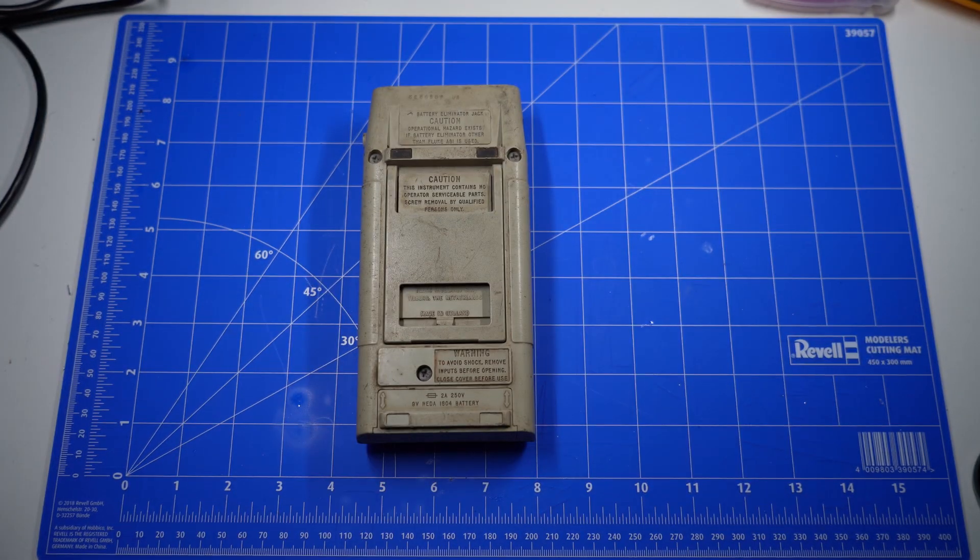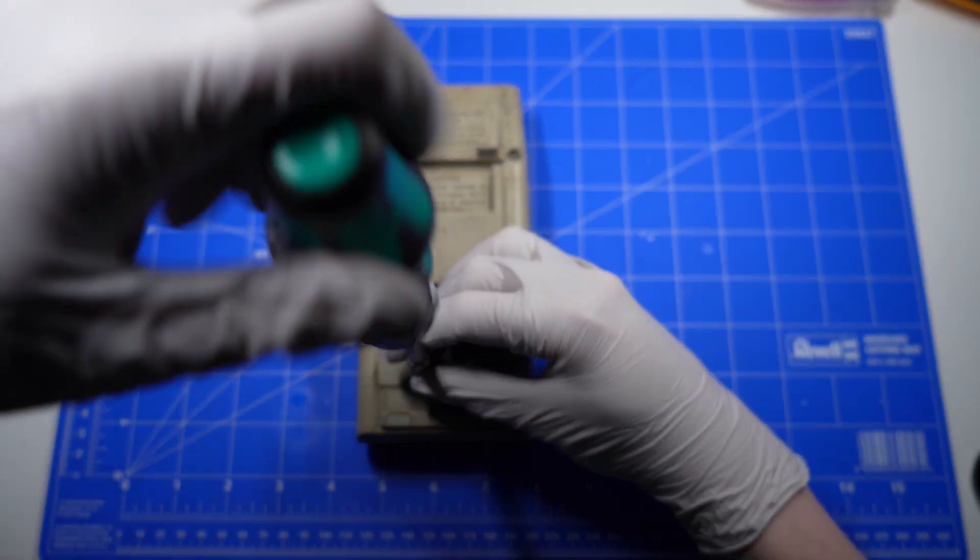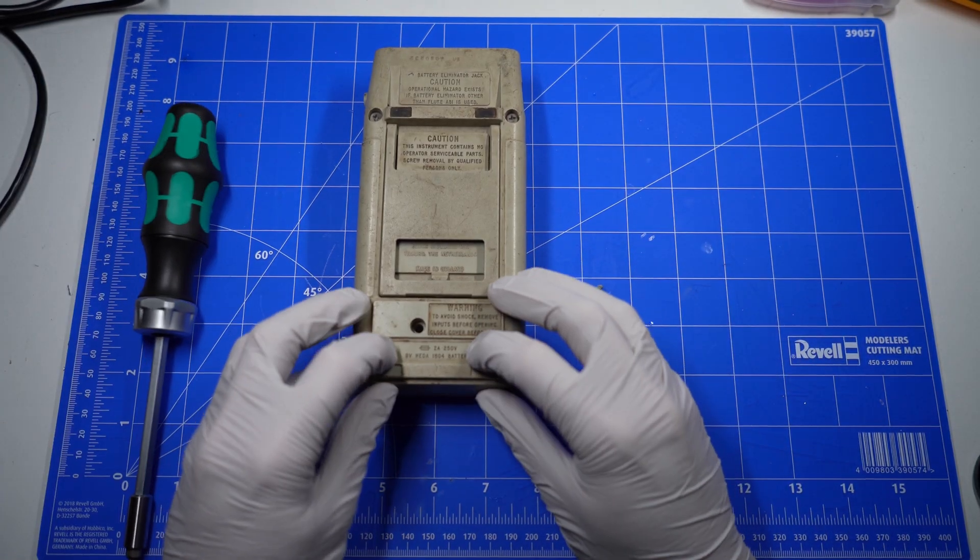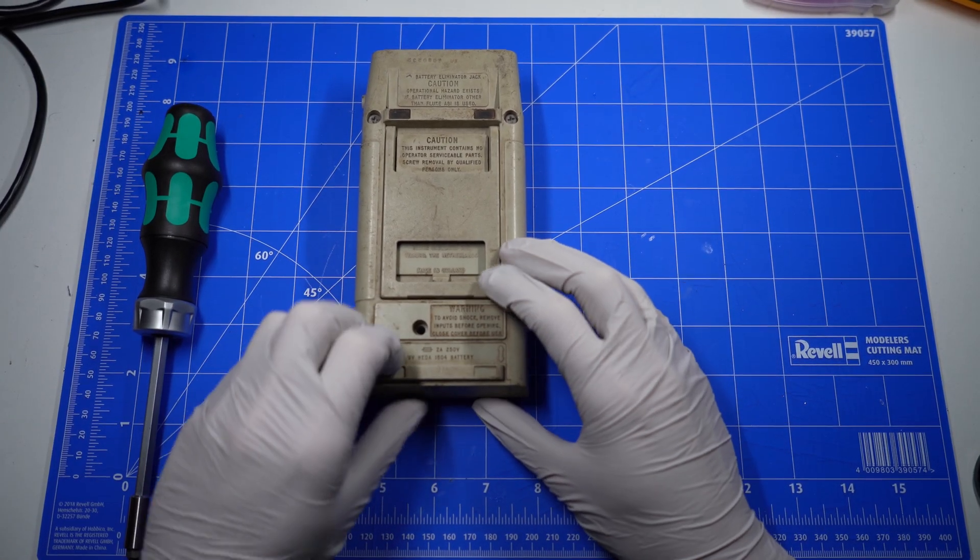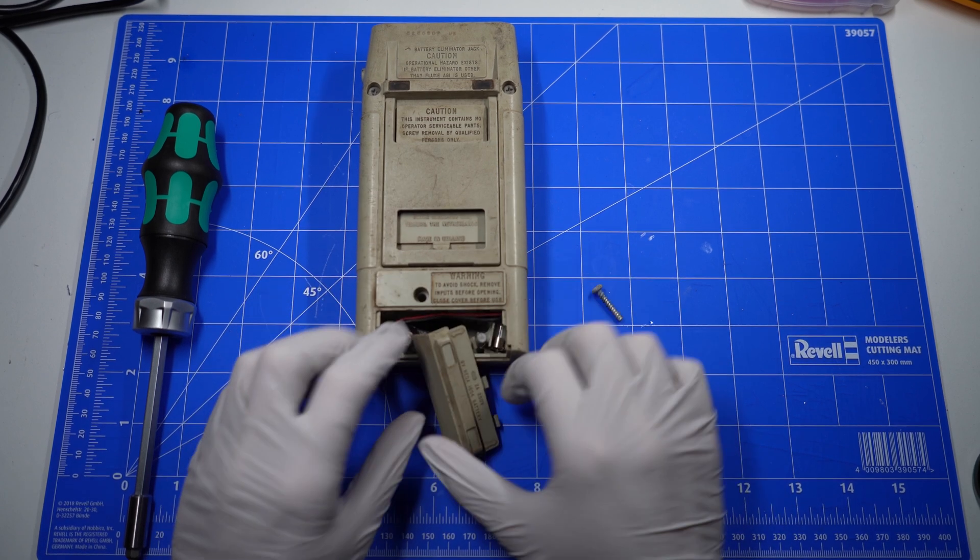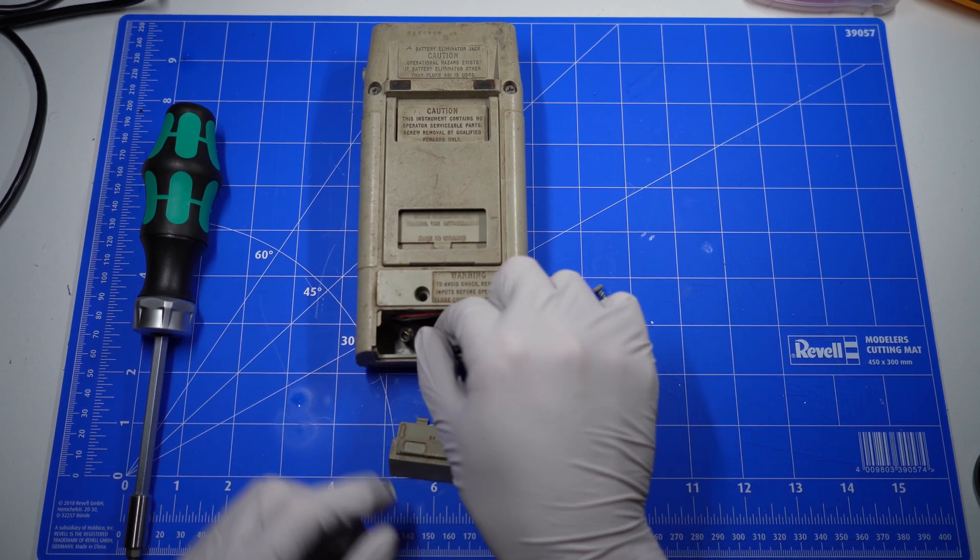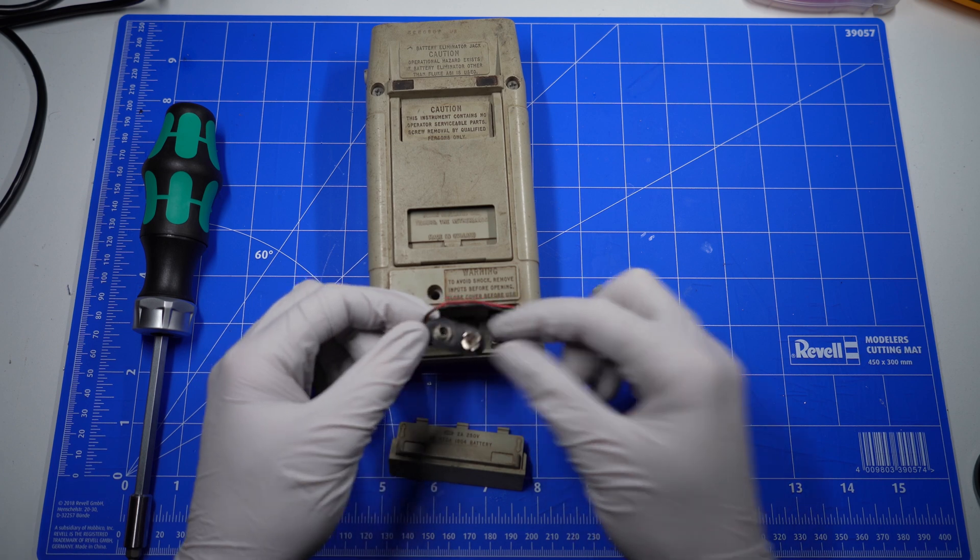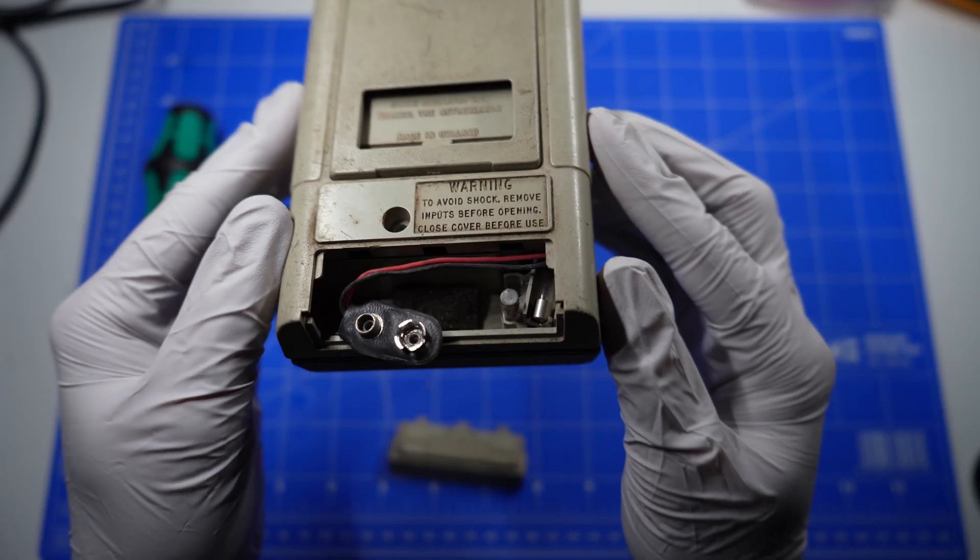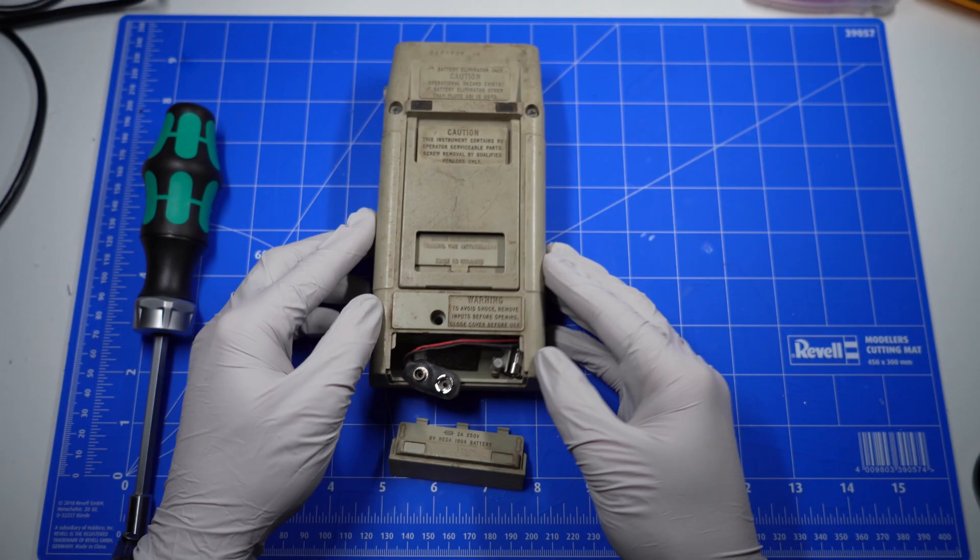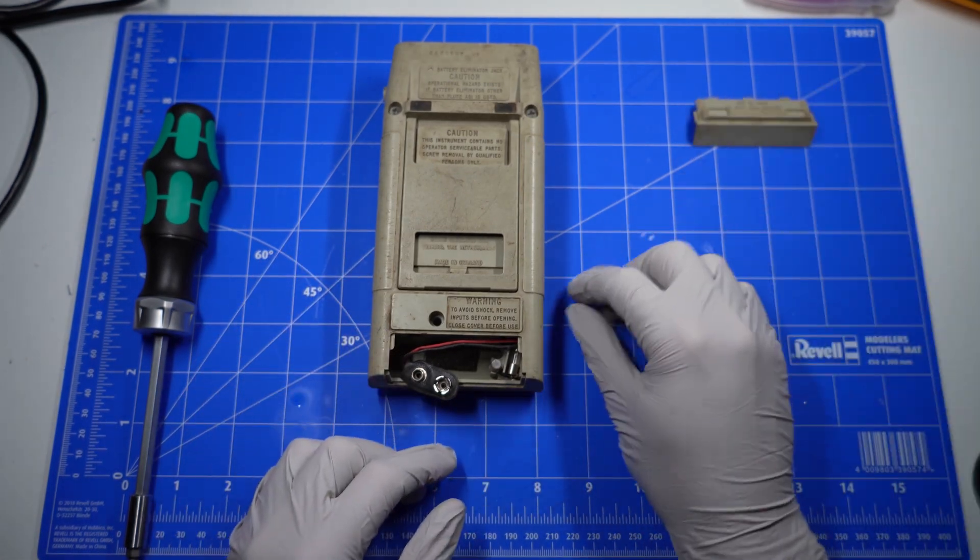So what I'm going to do first is get a screwdriver and take off this battery cover. Struggling to get it off. There we go. Taking a look inside, there's no corrosion as far as I can tell. The 9V battery connector looks good as well.